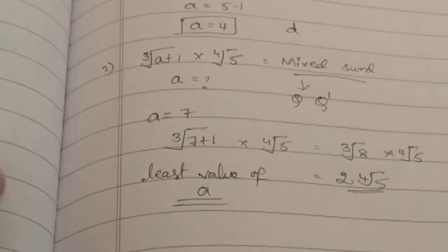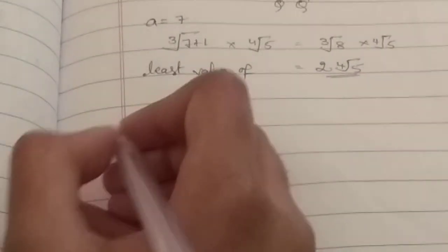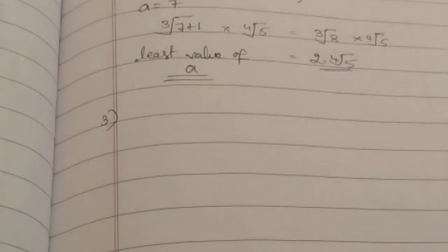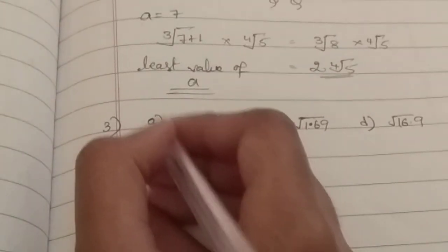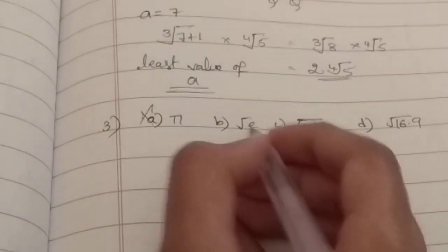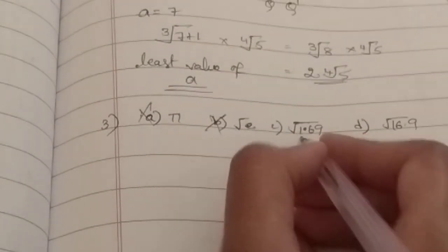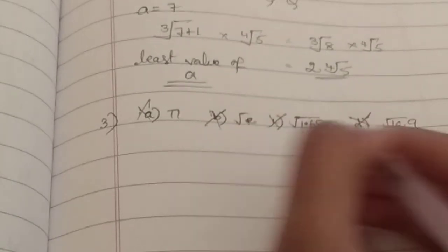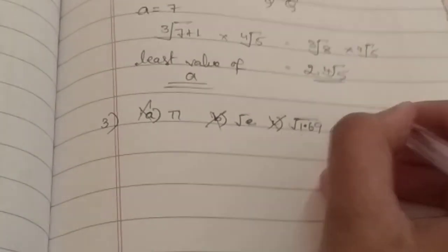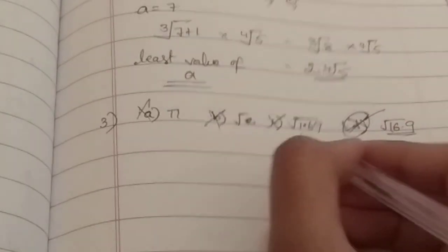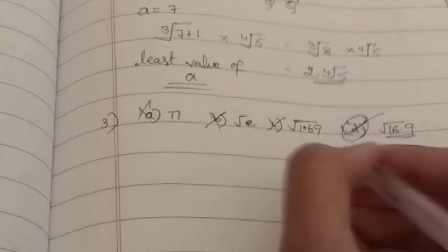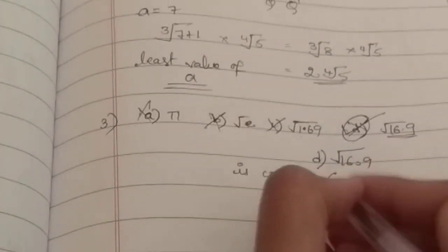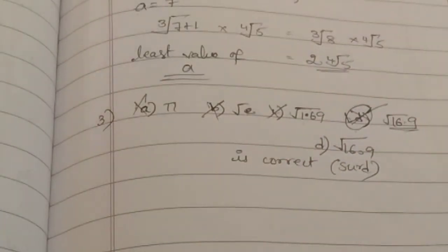Next is third question in Emerald Package. Among the following, a surd is. Pi is an irrational number but it is not a surd. So you can't take this. This is also an irrational number but not a surd. This is a rational number. This is the right answer. Because this is an irrational number. So D, that is root over 16.9, is the correct option. That means it is a surd.